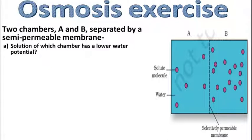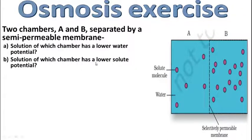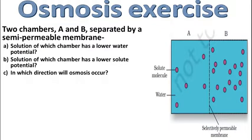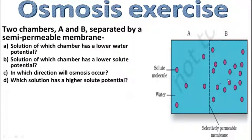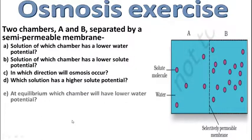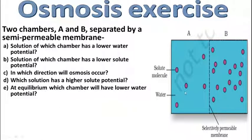B वाले का water potential कम है। उसके बाद — solution of which chamber has lower solute potential? Solute potential जिसके अंदर solute molecules कम हैं, वो A के अंदर है — A का solute potential कम है। In which direction will osmosis occur? Osmosis की direction होगी B की तरफ — जिसका water potential lower है, उसकी तरफ — जब तक equilibrium पर दोनों का water potential equal नहीं हो जाता।